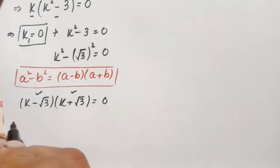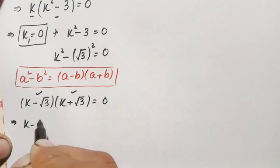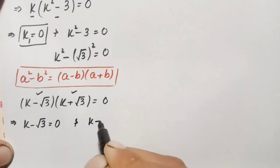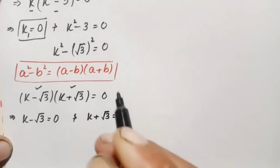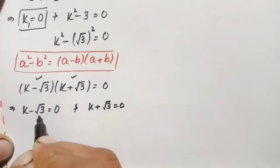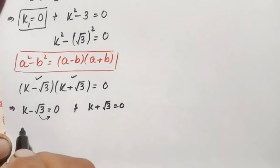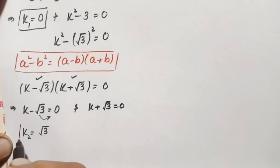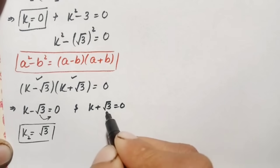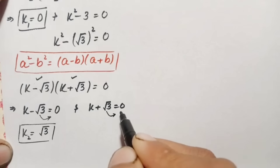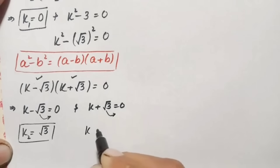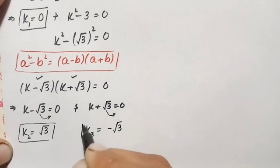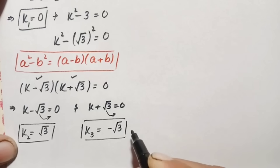Using this identity, we get (k minus √3)(k plus √3) equals zero. So either k minus √3 equals zero, giving k₂ equals positive √3, or k plus √3 equals zero, giving k₃ equals negative √3.